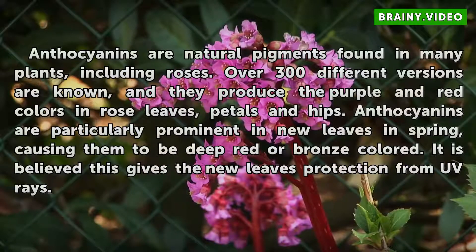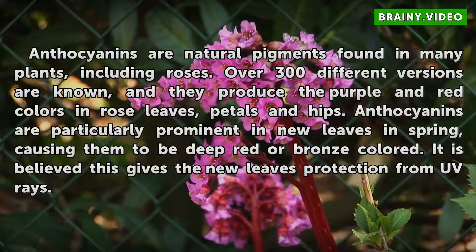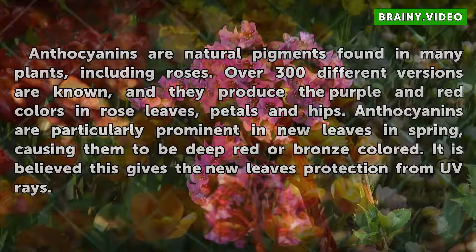Anthocyanins are particularly prominent in new leaves in spring, causing them to be deep red or bronze colored. It is believed this gives the new leaves protection from UV rays.